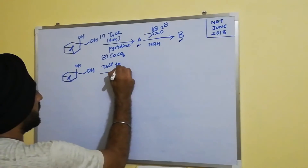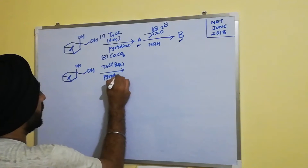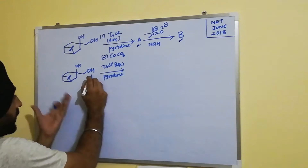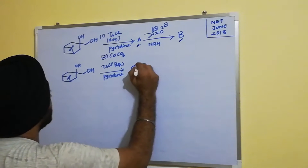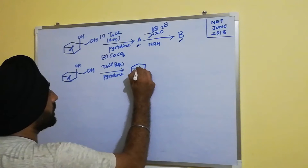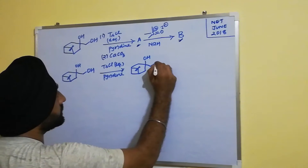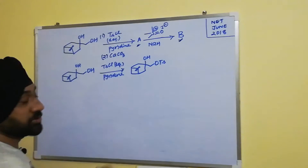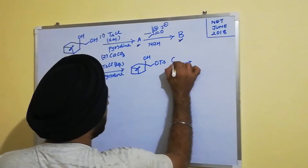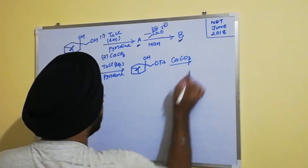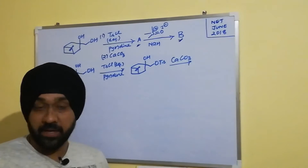We know that when we use only one equivalent of tosyl chloride using pyridine as a base, only the primary hydroxy group gets tosylated. So we get this tosylated compound. In the next step, this compound is treated with calcium carbonate.